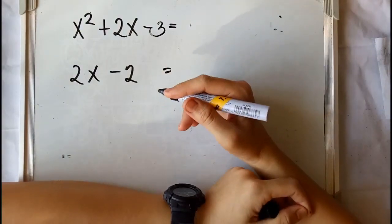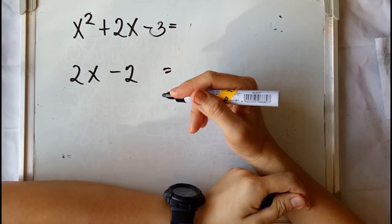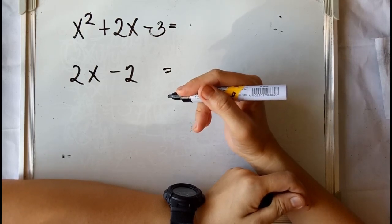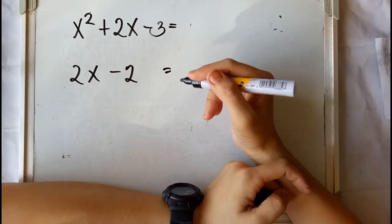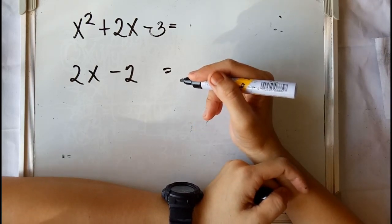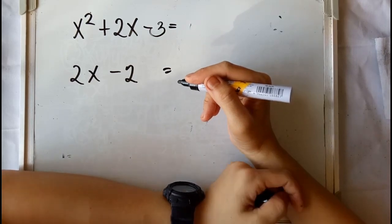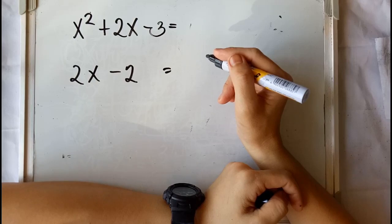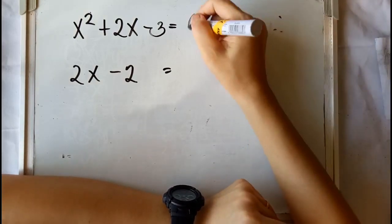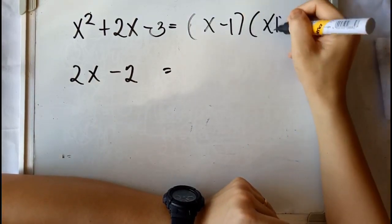Let us try another example with polynomials having two or more terms. We have x squared plus 2x minus 3 and 2x minus 2. To find the LCM, all we need to do is factor each polynomial if they are factorable. x squared plus 2x minus 3 is factorable and its factors are (x minus 1) and (x plus 3).